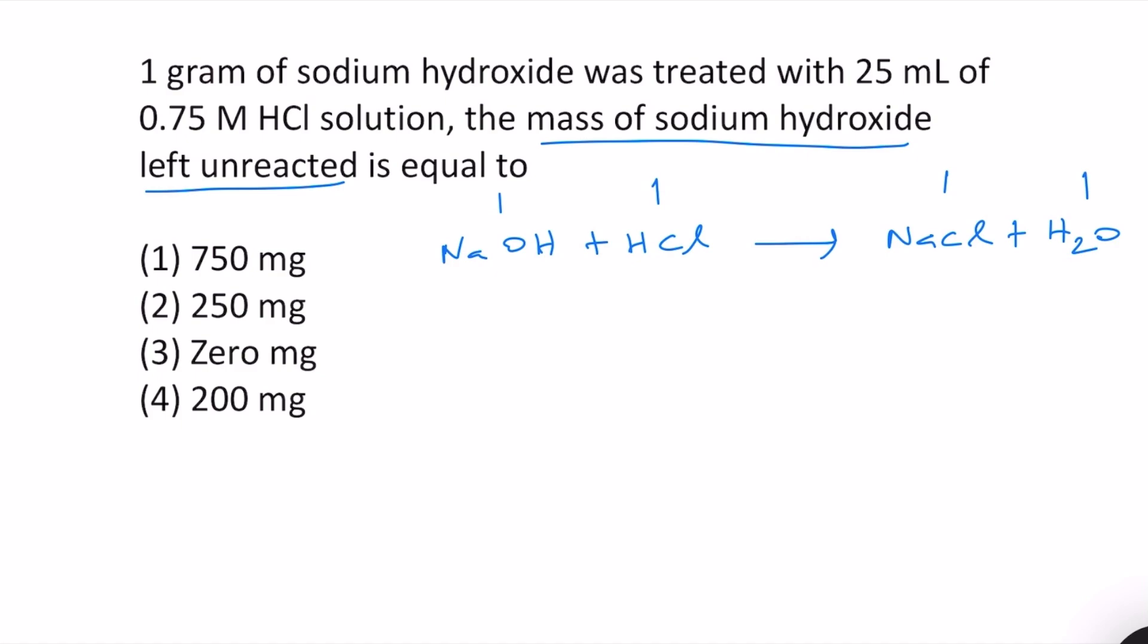So let us calculate in terms of moles how much amount of NaOH is there and how much amount of HCl is there. The given values here: NaOH 1 gram, HCl 25 ml 0.75 molar.